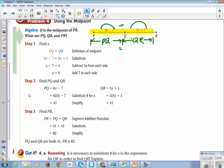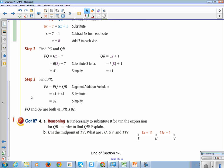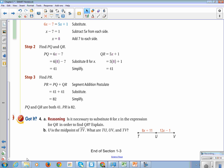Let's see if we got it. Is it necessary to substitute 8 in for x in the expression for QR in order to find QR? Explain. So did we need to plug in 8 for QR in order to find it? So because PQ is congruent and equal to QR, we didn't need to do any math to find QR. We just say it's equal to PQ, so it's got to be 41. And then for PR, you do have to double. So for some people, adding 41 and 41 is easier than multiplying 41 by 2.